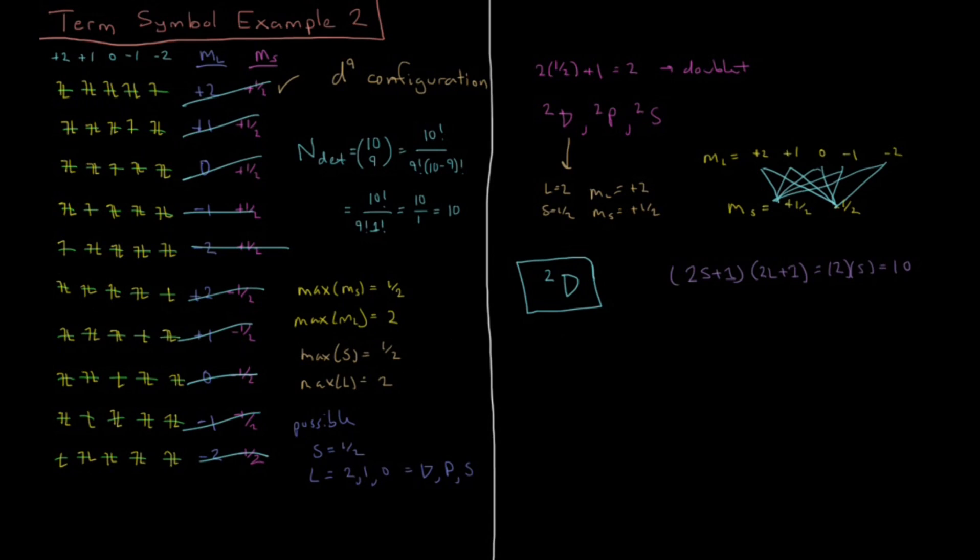If we want to include values of J as well, remember that J is less than or equal to the sum of L and S, and greater than or equal to the magnitude of their difference. For D, our L equals 2, S equals 1/2. That gives possibilities of 2 plus 1/2 equals 5/2, and 2 minus 1/2 equals 3/2. Those are the only allowed J values. So our term symbols including J are doublet D 5/2 and doublet D 3/2.